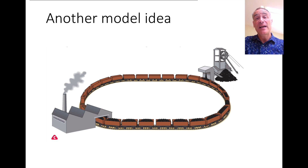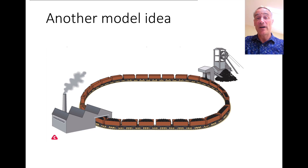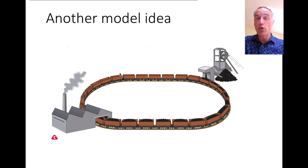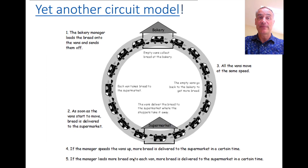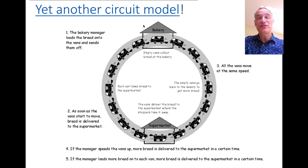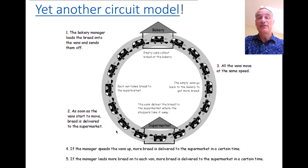Here we have a power station which needs coal, and here we have the coal mine taking coal out of the ground and putting it in trucks. Notice the trucks are equally spread out all the way around, and they're delivering that coal to the power station. Yet another model I like: you've got a bakery delivering bread to the supermarket.